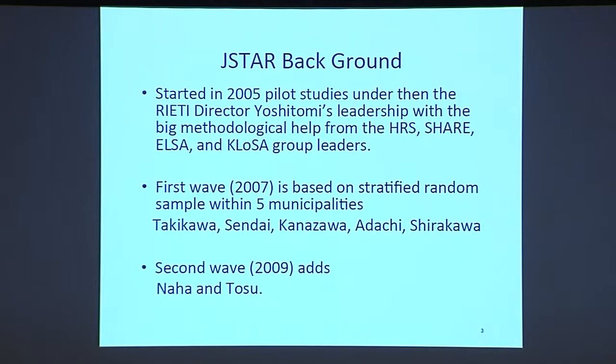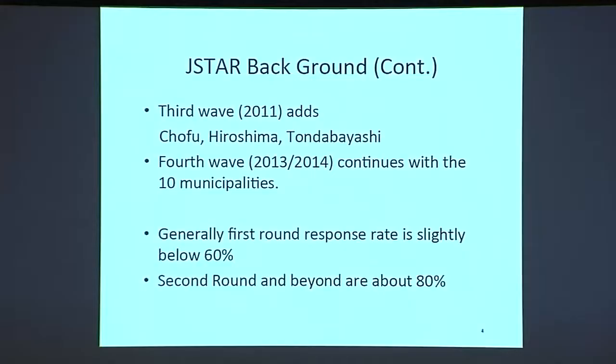The JSTAR started in 2005 as pilot studies under REITI director Yoshitomi's leadership, with methodological help from the HRS, SHARE, ELSA, and CLOSA group leaders. The first wave in 2007 is based on a stratified random sample within five municipalities: Takikawa, Sendai, Kanazawa, Adachi, and Shirakawa. The second wave in 2009 adds Naha and Tosu. The third wave in 2011 adds Chofu, Hiroshima, and Tondabayashi. The fourth wave continues with all ten municipalities, funded generously by REITI after difficulties securing funding.